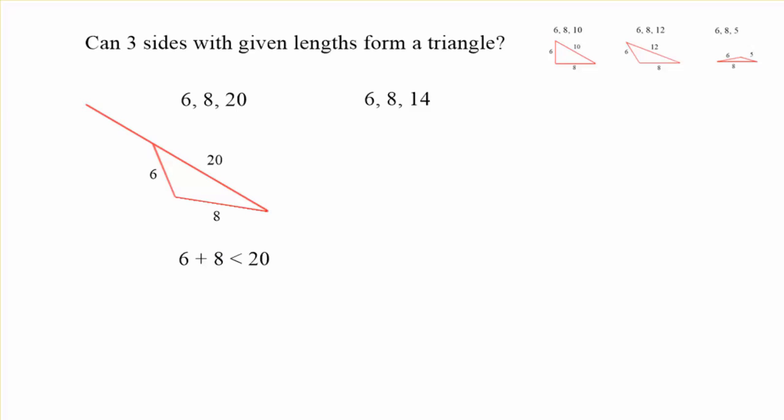What about 6, 8, and 14? The 6 and the 8 together equal 14. Now the 14 is still going to be very long. But what if it's exactly 14? Well, let's go ahead and wind that out to a straight line to make it exactly 14. That doesn't make a triangle. The reason why this doesn't work is because it's equal to that third side. So the 6 plus the 8 is equal to 14. That's why it doesn't work.